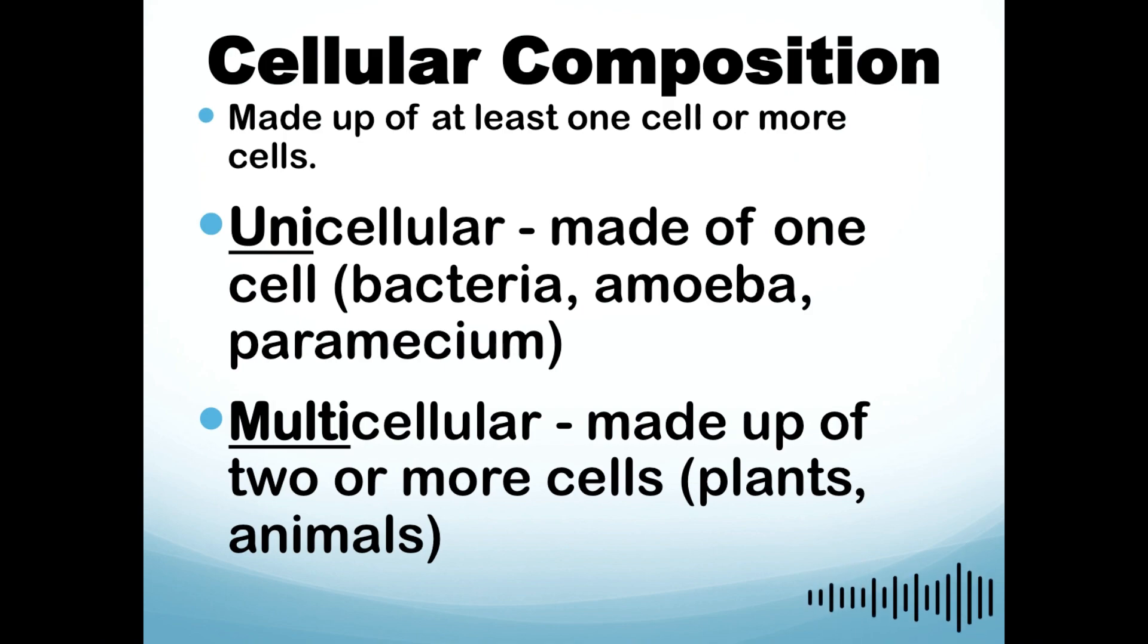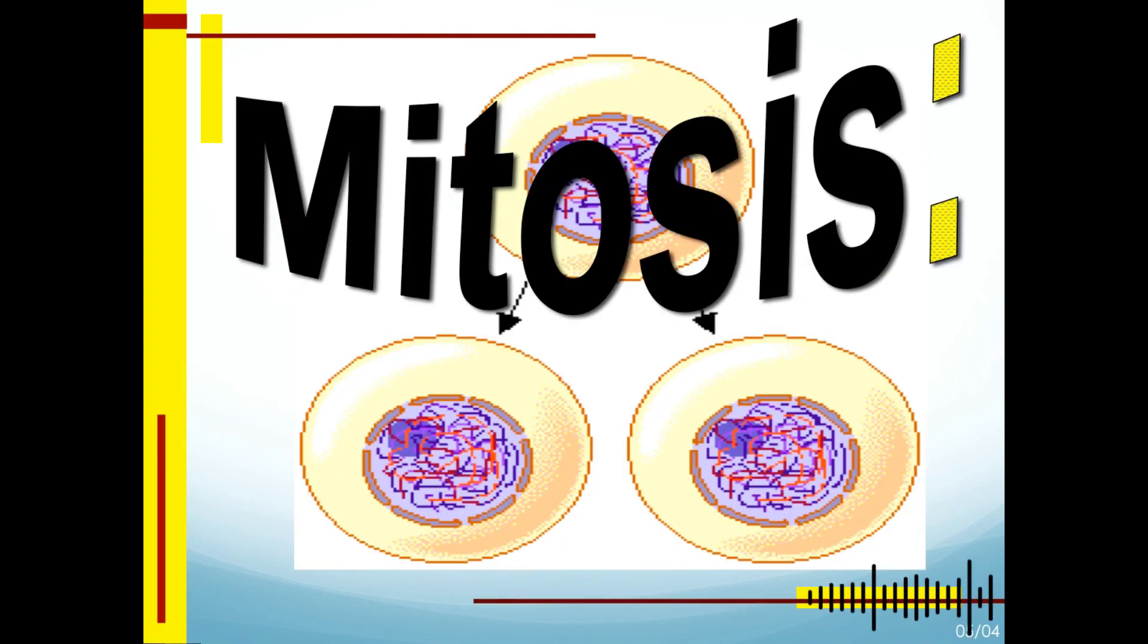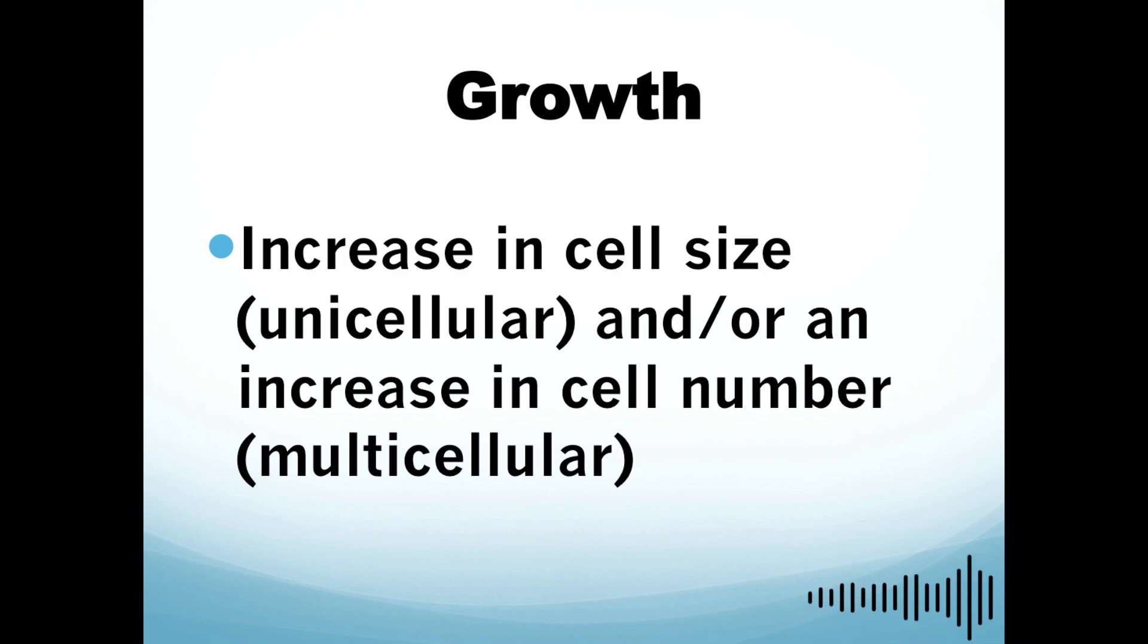Now let's proceed to the next characteristic, which is growth. If we define what is growth, it says here it increases cell size for unicellular and/or an increase in cell number for multicellular. Increase in cell size means from small to large. A good example of this is mitosis.